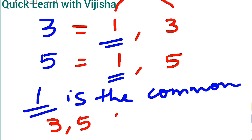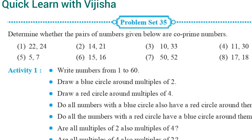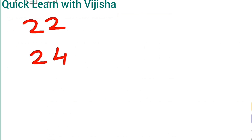Understanding, children? Now we will get into the exercise: determine whether the pairs of numbers given below are co-prime numbers. The first question is 22 and 24.